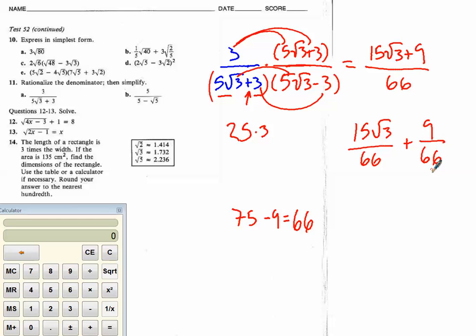The 3 is coming from both parts in the numerator. So, 15 divided by 3 is 5. 3 goes into 9, 3 times. 3 goes into 66, 22 times. So, there is our answer. That's it. So, let's take a look at b.